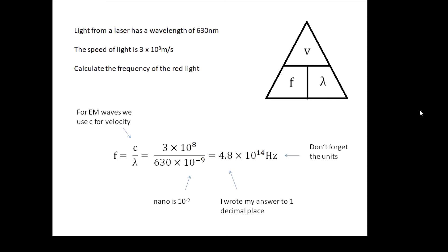I don't write down 4.81762138218 — I write 4.8 because one decimal place is enough. So 4.8 times 10 to the 14 hertz. Don't forget the units. And that's the answer.